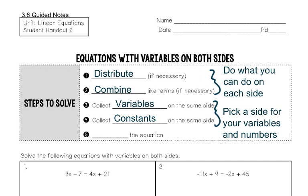It says distribute and combine like terms if necessary — that just means do what you can do on each side. If you can simplify anything, put things together that go together on each side of the equal sign. Then steps 3 and 4: put your variables on one side, put your numbers on the other. When it says constants, those just mean numbers, and variables are letters that stand for numbers. So pick a side for your letters and pick a side for your numbers. You need to separate them — put your letters on one side and your numbers on the other.